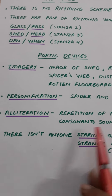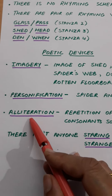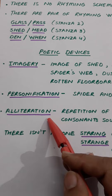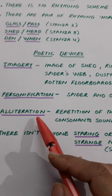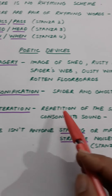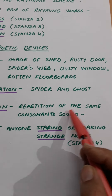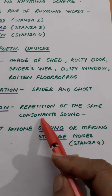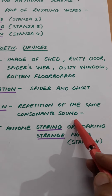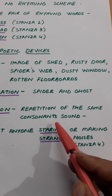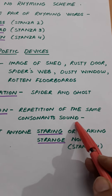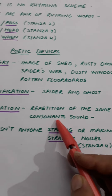The third poetic device used in this poem is alliteration. Now what is alliteration? It means the repetition of the same consonant sound. Students, mind it — it is sound, not the alphabet.